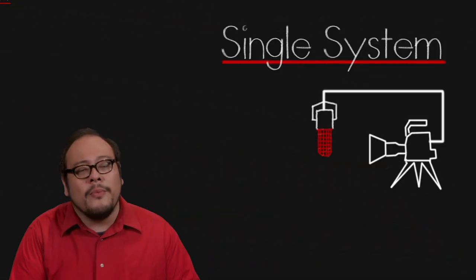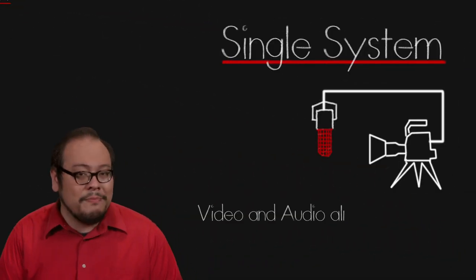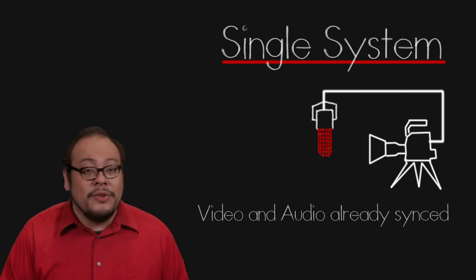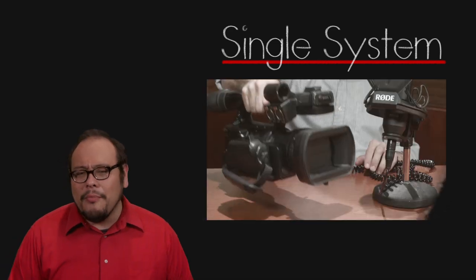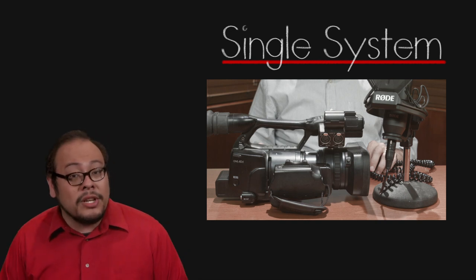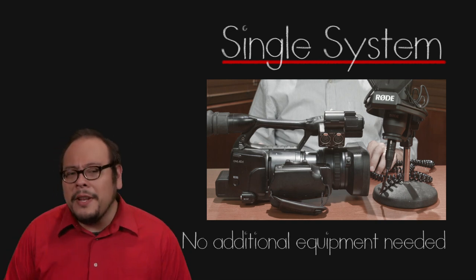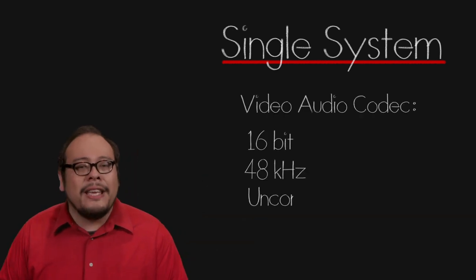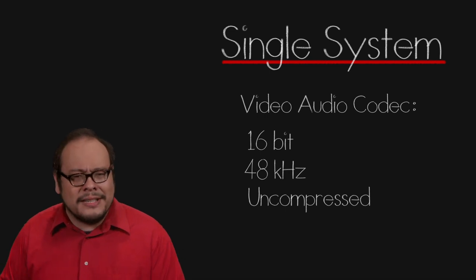With a single system, recording audio with video means there's no need to sync up the footage in post production — a huge time saver, especially in tight turnaround situations like news or documentary. With a camera designed for broadcast that has robust and professional audio inputs and a preamp, the single system also avoids the cost of purchasing additional recorders. Video codecs have predefined settings for audio, most of them recording at 16-bit, 48 kHz uncompressed audio.